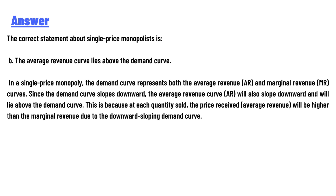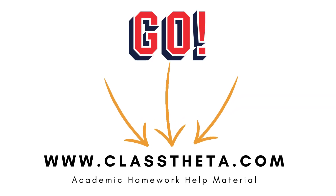In a single price monopoly, the demand curve represents the average revenue (AR), and the MR curve lies below it. Since the demand curve slopes downward, the average revenue curve also slopes downward. At each quantity sold, the price received — the average revenue — will be higher than the marginal revenue, due to the downward sloping demand curve.